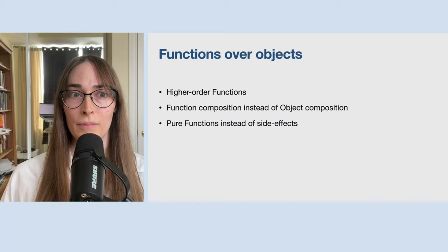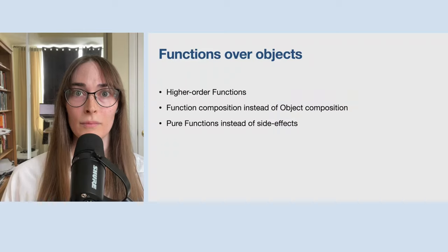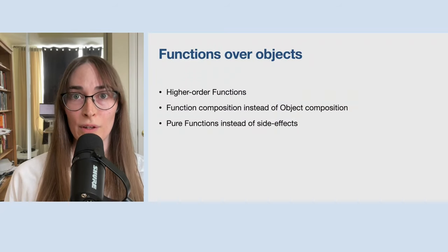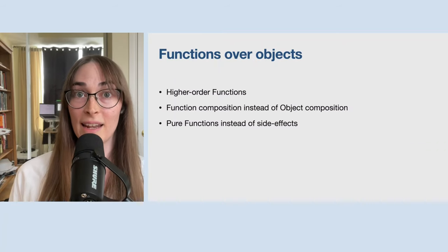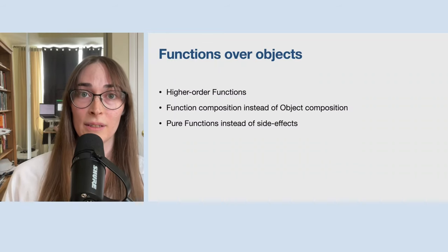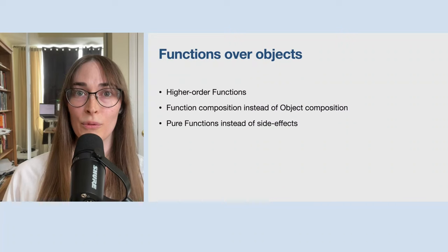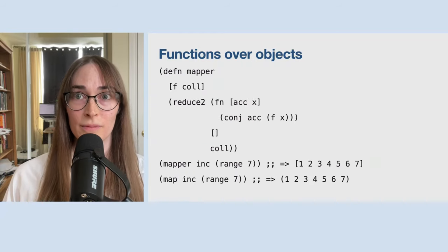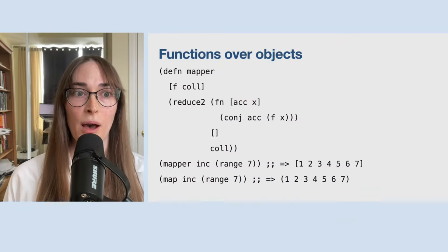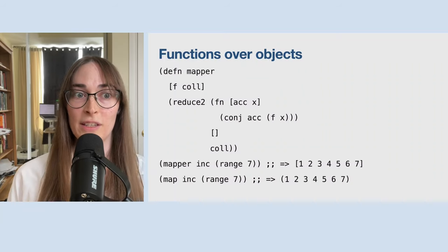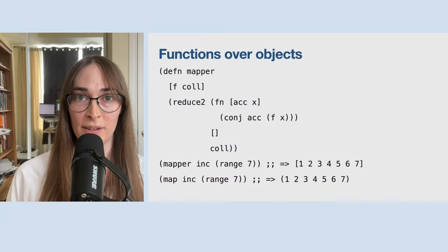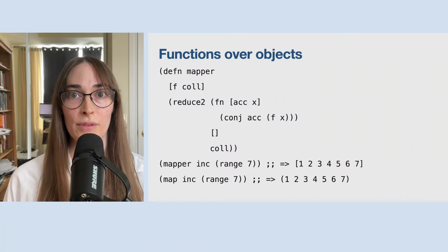The basis for reducers is the higher-order function. We can use function composition instead of object composition using higher-order functions — functions are first-class citizens. Ideally we have pure functions instead of side effects. We can combine reduce with a higher-order or callback function to create reducers and recreate the classic map operation. You can see my mapper at the bottom contrasted with Clojure core's map — map, inc, range 7 — just contrasting it with what comes with Clojure out of the box.